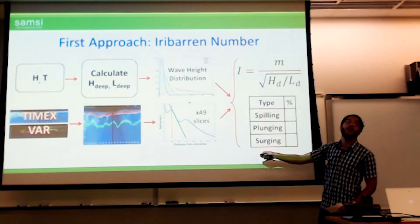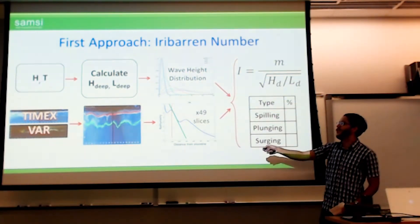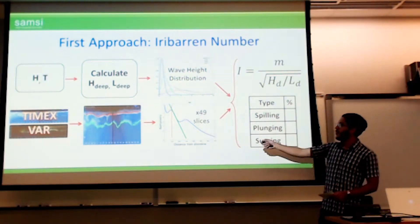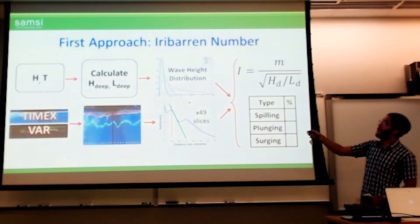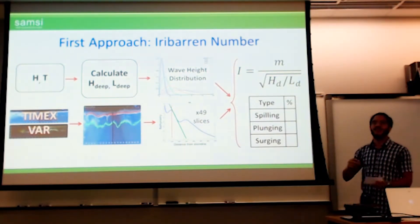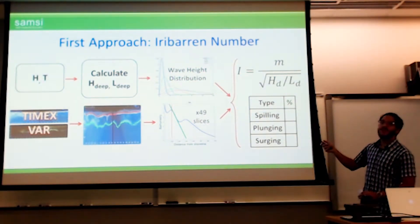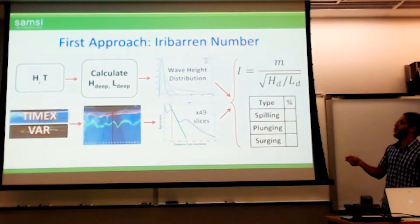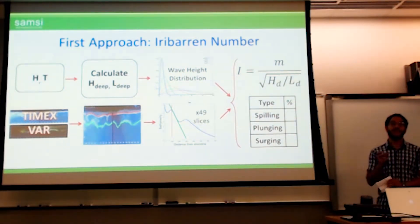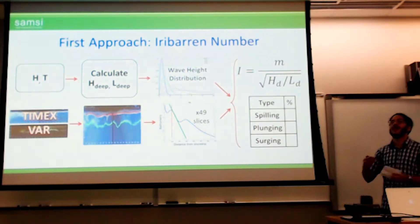This is repeated for 49 column slices dividing the beach into 50 regions. With the slope information and the wave height distribution, we sample 10,000 times, get 10,000 different wave height samples, plug them into the Iribarren number formula along with the slopes, and for each slice get 10,000 different Iribarren numbers. These are sorted into whether they predict spilling, plunging, or surging, and the percentages are interpreted as the probabilities of each wave breaking type.